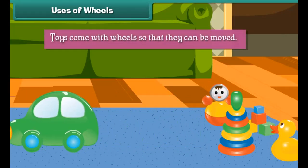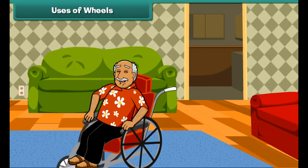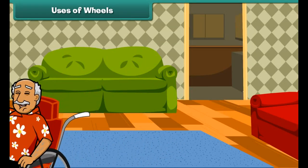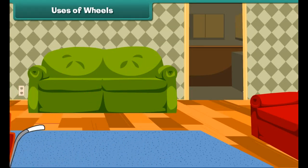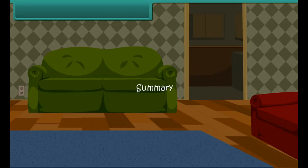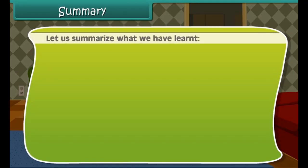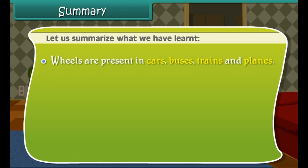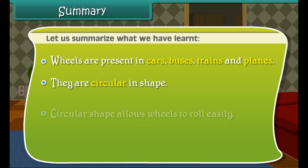Wheels are useful to us in many ways. Wheels allow movement of vehicles. Toys come with wheels so that they can be moved. A wheelchair enables movement of a disabled person or a patient from one place to another.